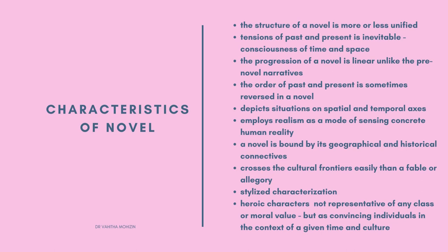The characteristics of a novel are in complete contrast to pre-novel narratives. The structure of a novel is more or less unified. The tensions of the past and present are inevitable — there is a consciousness of time and space. The progression of a novel is linear, and the order of past and present is sometimes reversed. It depicts situations on a spatial and temporal axis, implying realism as a mode of sensing concrete human reality. A novel is bound by its geographical and historical connectives, and crosses cultural frontiers more easily than a fable or allegory. Characterization is stylized, with heroic characters not representative of any class or moral value, but as convincing individuals in the context of a given time and culture.